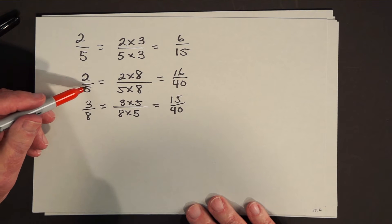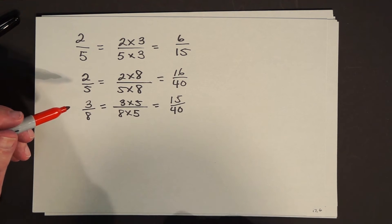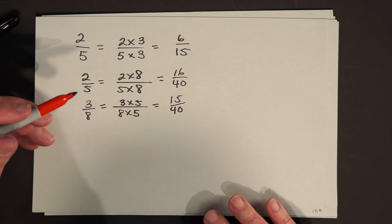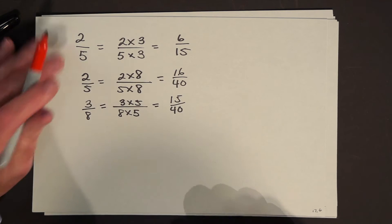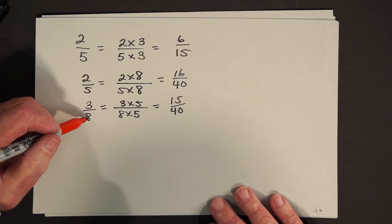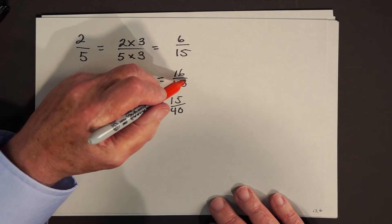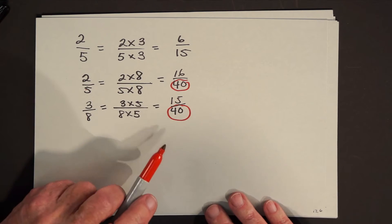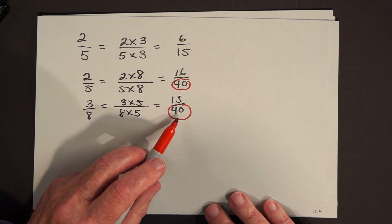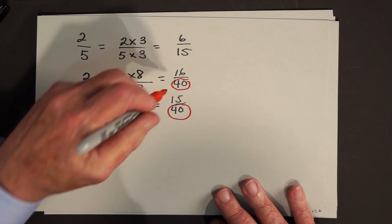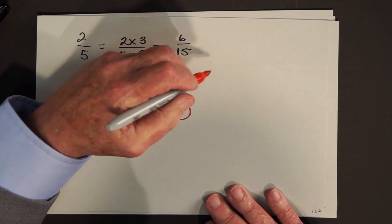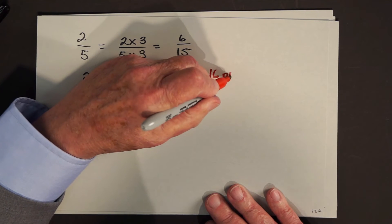Now what did we do before? To compare 2 fifths and 3 eighths, we divided the cornbread into 40 equally sized pieces, and showed that 2 fifths was 16 of those pieces and 3 eighths was 15 of those pieces. Watch how this looks formally. To compare these, we need a common denominator. Since the denominators are 5 and 8, a common denominator will be 40. Five goes into 40 eight times, eight times 2 is 16. Eight goes into 40 five times, five times 3 is 15. And one fortieth is one piece of the cornbread, so 2 fifths is 16 pieces.